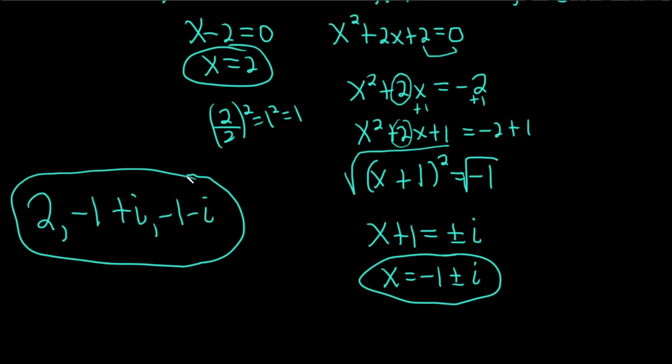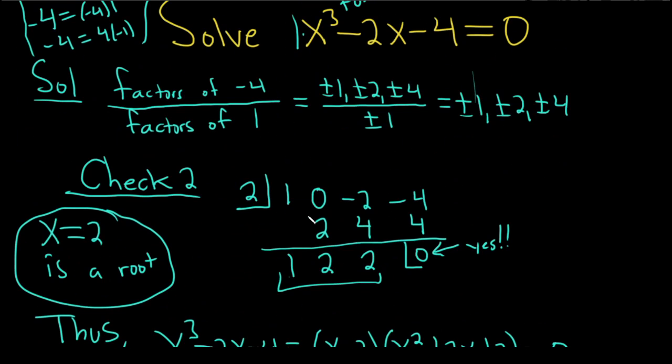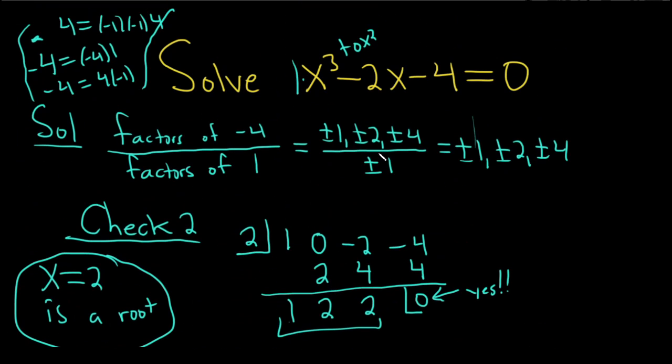I went through that kind of quickly, but hopefully it made a little bit of sense. And just a really quick recap. So when you first see the problem, it's cubic, so you can't use the quadratic formula. So you want to reduce it to a quadratic. So you start by looking at the factors of this one, and then you want to divide by the factors of this one. So factors of negative 4 over factors of 1. It's always last over first. And then always put a plus or minus, always, no matter what, and then just divide 1 over 1, 2 over 1, 4 over 1.